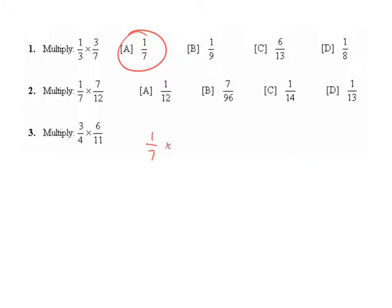Question 2: 1/7 times 7/12. We have 1 times 7, and then 7 times 12. That gives us 7/84, which can be simplified because 7 is a common factor of both 7 and 84. So in simplest form, that is 1/12.